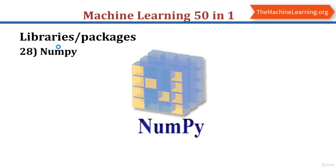The next topic is libraries and packages for machine learning. NumPy is a library for Python adding support for large multidimensional arrays and matrices, along with a large collection of high-level mathematical functions. NumPy forms the foundation of the machine learning stack. NumPy is used for creating vectors and matrices, selecting elements, describing a matrix, applying operations to elements, finding maximum and minimum values, calculating average, variance and standard deviation, reshaping arrays, transposing vectors or matrices, finding determinants and rank, calculating the trace, finding eigenvalues and eigenvectors, adding, subtracting and multiplying matrices, calculating dot products, inverting a matrix, and generating random values.